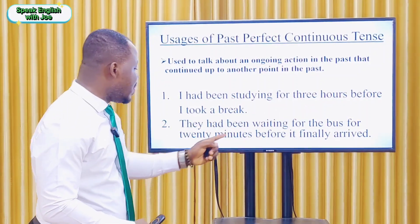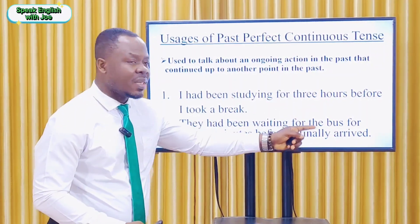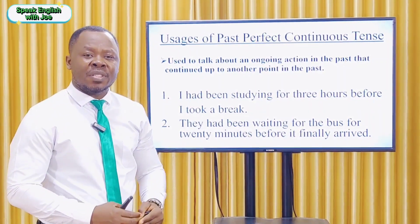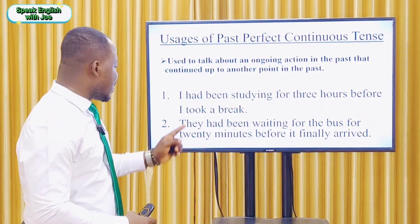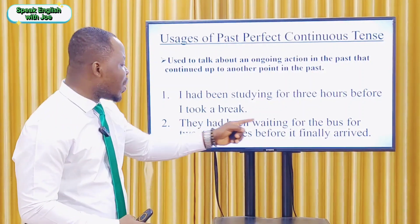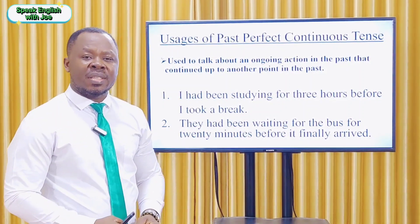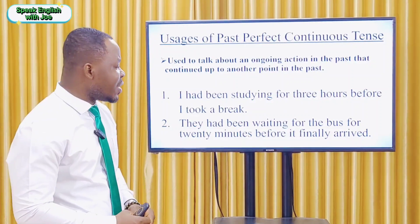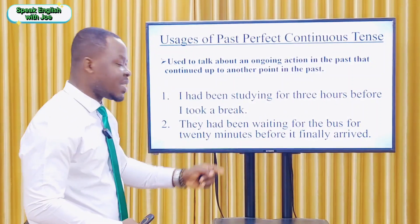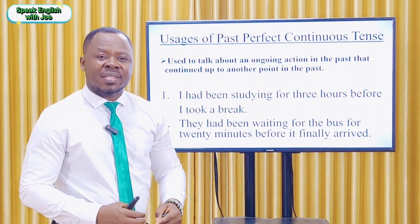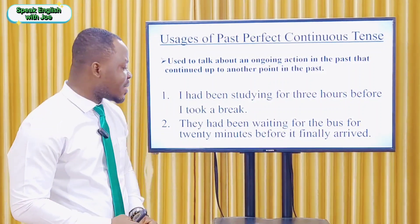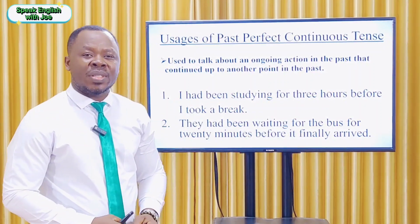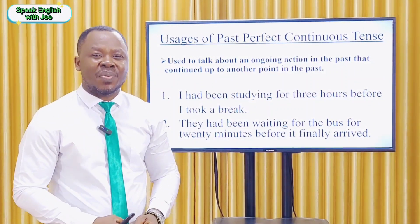Example two: 'They had been waiting for the bus for 20 minutes before it finally arrived.' In this sentence, the first ongoing action is 'they had been waiting', in the past perfect continuous tense. The duration is 'for 20 minutes', and the second action is 'it finally arrived', in the past simple tense.